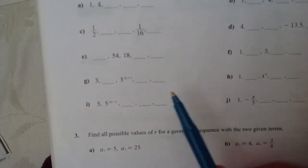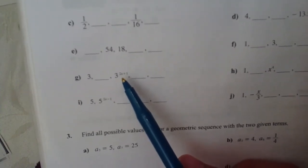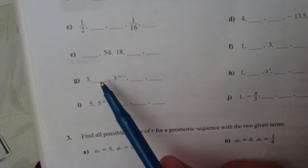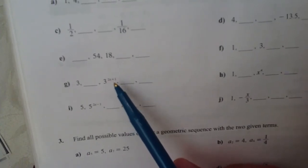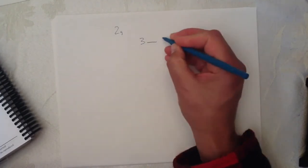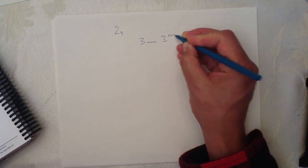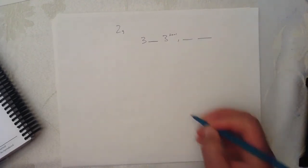Let's do 2G. 2G gives us this, and this is a big scary mess. This is enough to make you run for the door. 3, then something, then 3 to the 2 squared plus 1, then something, then something. Never fear. First, let's write it all out. 3, then something, then 3 to the 2X plus 1, and then something, and then something.